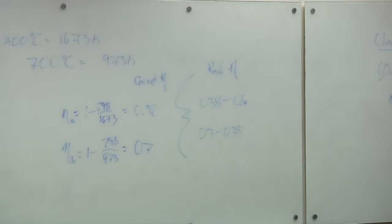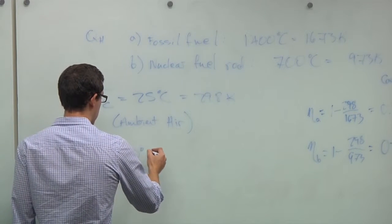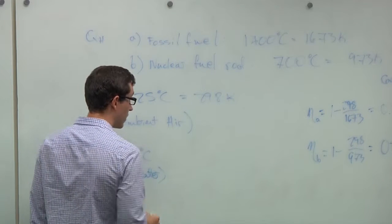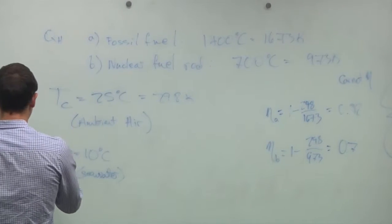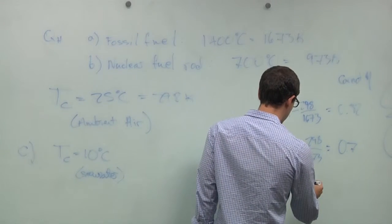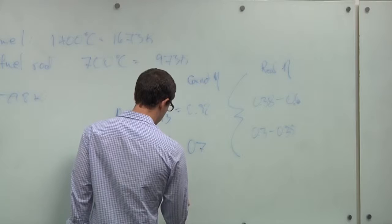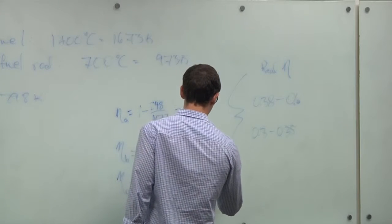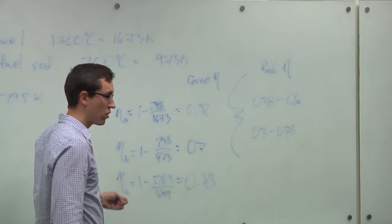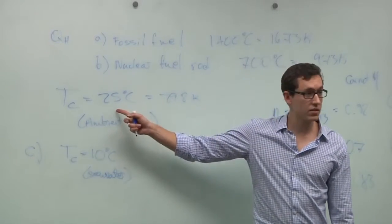Let's try something else. Now, let's say that the cooling source is equal to 10 degrees C. We're going to say it's like sea water or something. Although, this is pretty cold for sea water. So, now, let's call this C. And we'll use the fossil fuel temperature. So, we've got 1 minus 283 over 1673. We're going to get 0.83. So, compare A and C to each other. You get about a 1% efficiency boost by going from having a 10 degree heat sink versus a 25 degree heat sink.